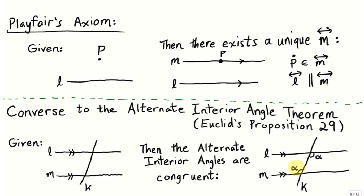This is the converse of Proposition 27, which says that if the alternate interior angles are congruent, then the lines L and M are parallel. In this video, we'll do a little bit more than just prove Proposition 29. We'll also show that Proposition 29 is equivalent to Playfair's axiom. We introduced this in a previous video and showed that Playfair's axiom was in fact logically equivalent to Euclid's 5th axiom in the context of neutral geometry.